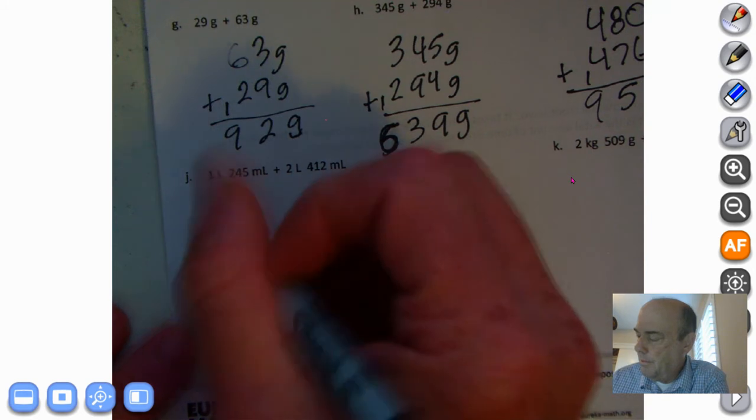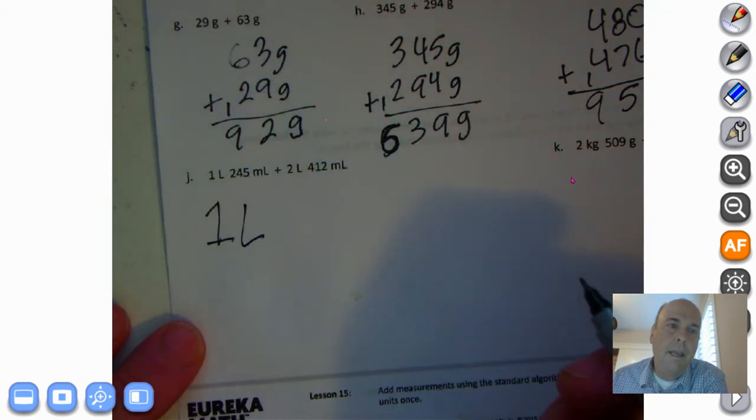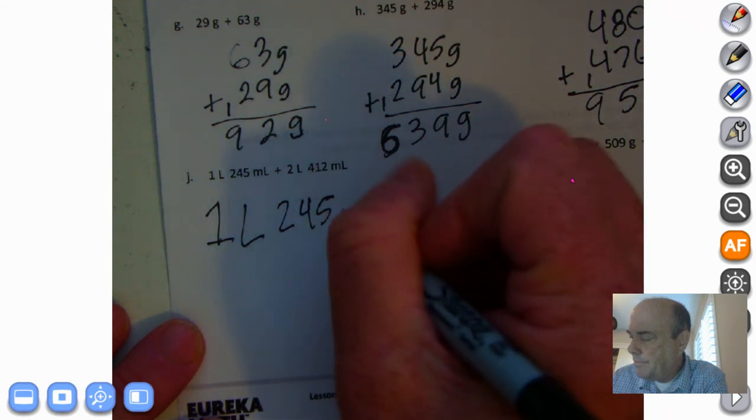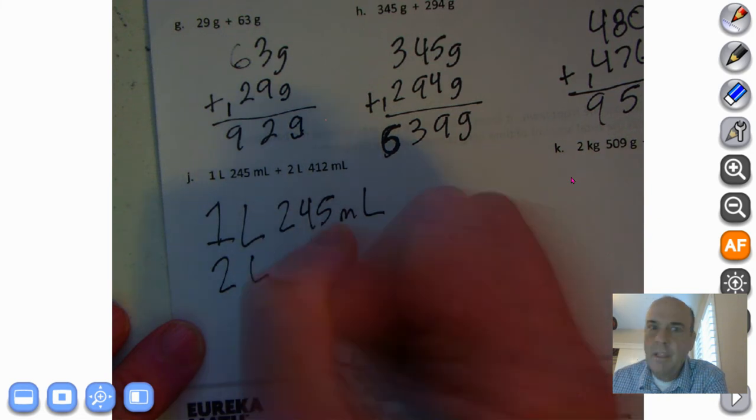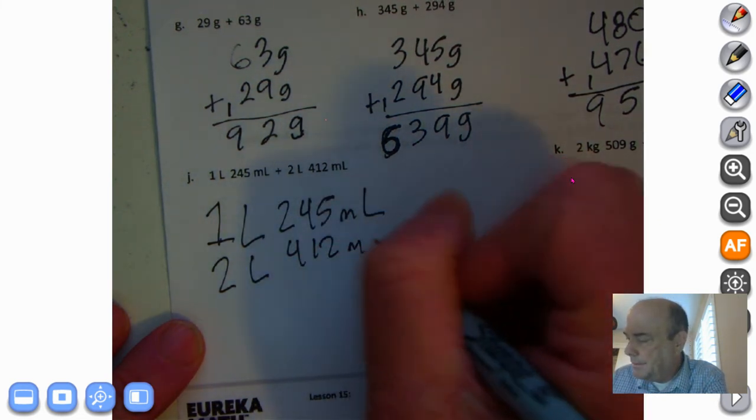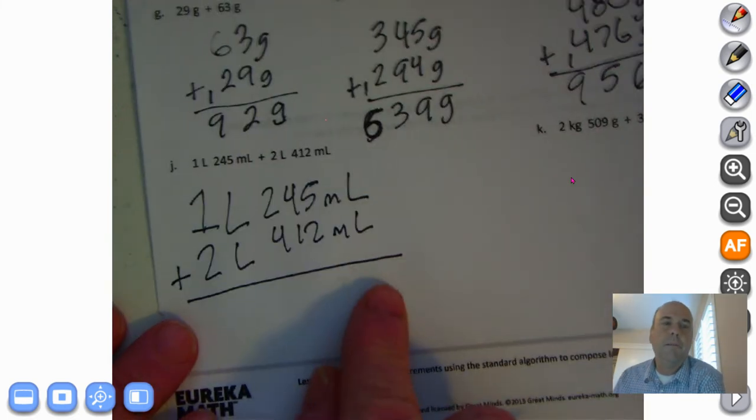Okay, we got a little mixed units going on here. We have one liter and 245 milliliters plus two liters, 412 milliliters. Now remember a thousand milliliters make up one liter. So go ahead and take care of this problem on your own.